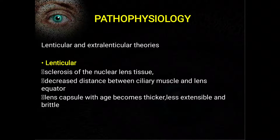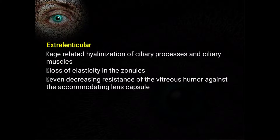According to the lenticular theory, as we grow older there is sclerosis of the nuclear lens tissue, which decreases the distance between the ciliary muscle and lens equator. The lens capsule with age becomes thicker, less extensible, brittle, and less elastic — which may lead to presbyopia. There may also be hyalinization of the ciliary processes and ciliary muscles with age.